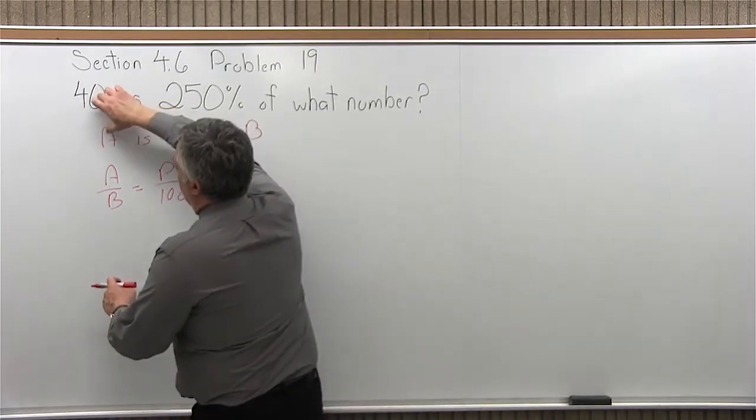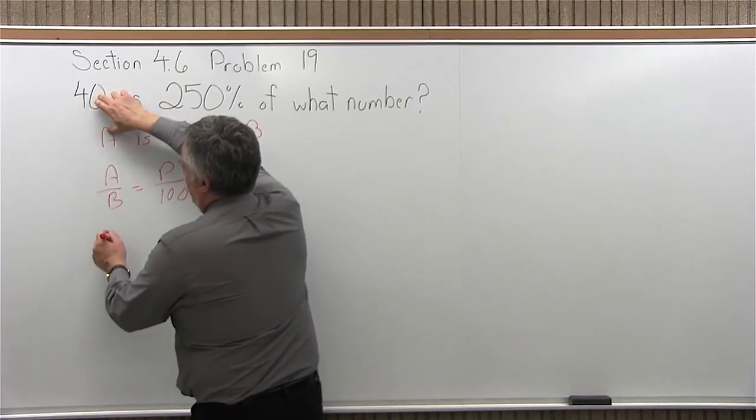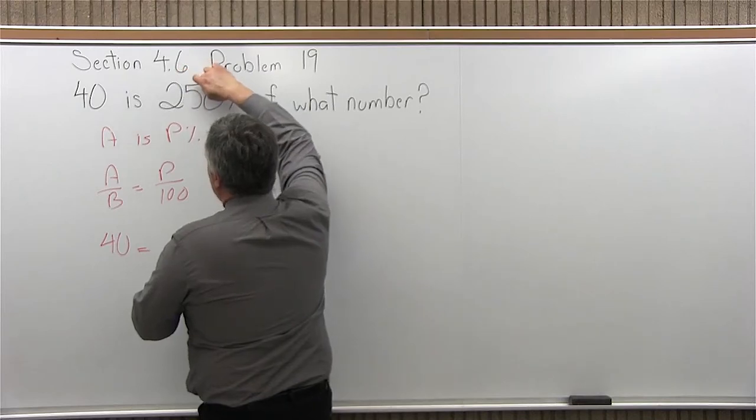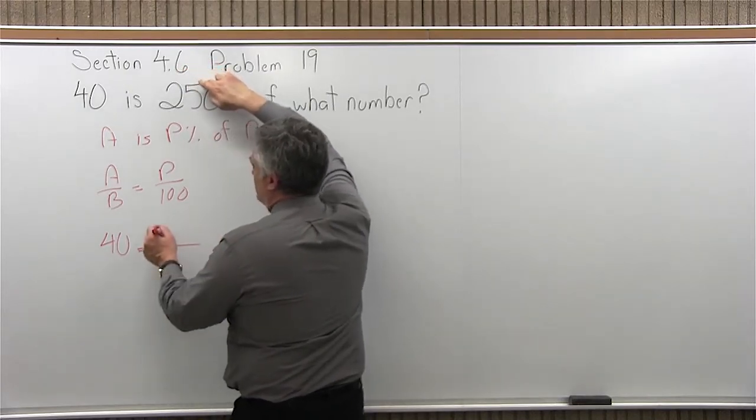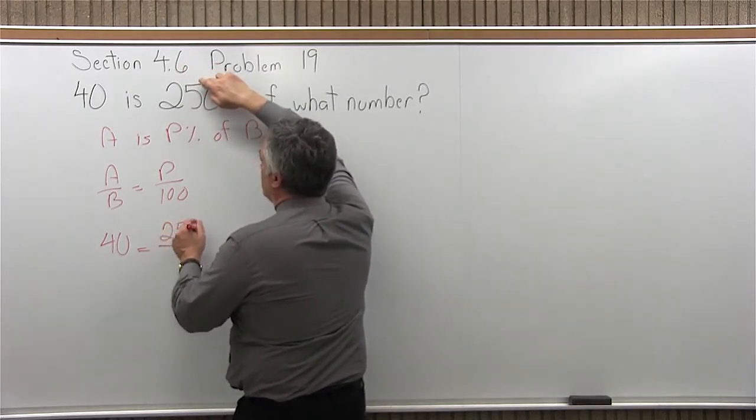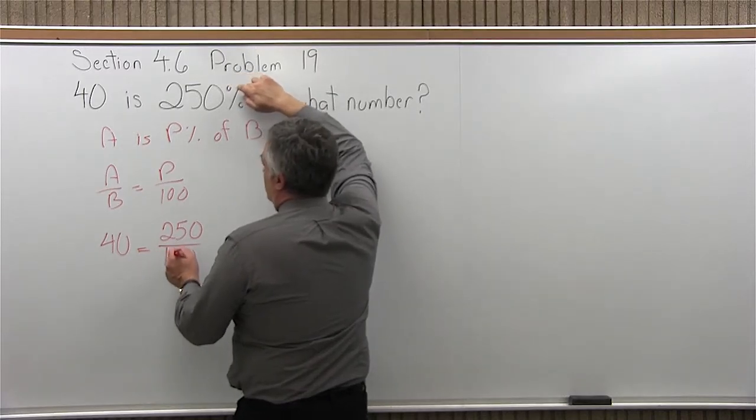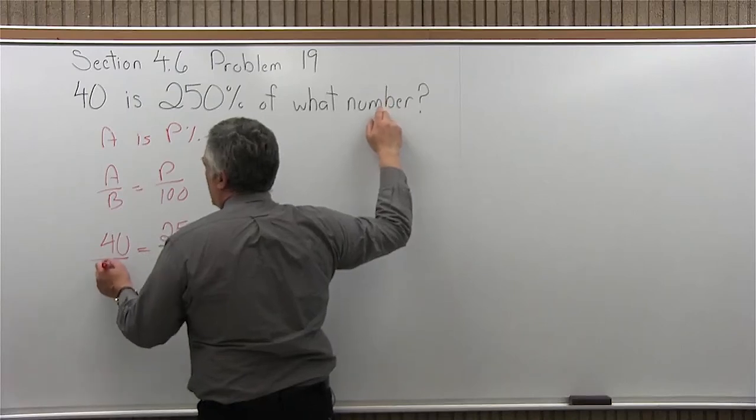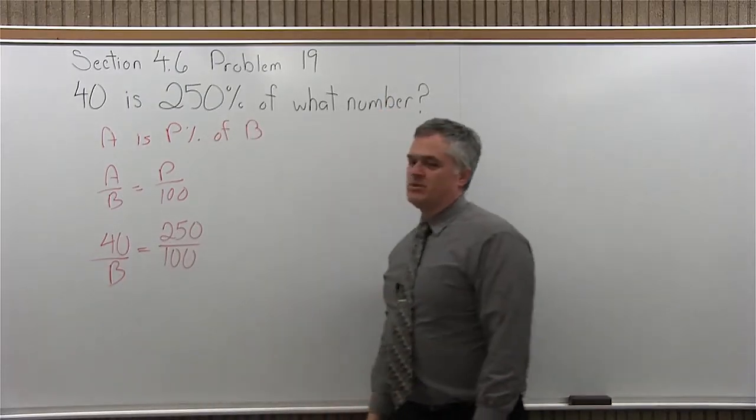So, let's do that. A, the first thing is the 40, is, that's my equals, 250 percent. So 250 is the numerator. And percent automatically goes in as 100. Of will bring me back into the 40. What number is the unknown, so I put B.